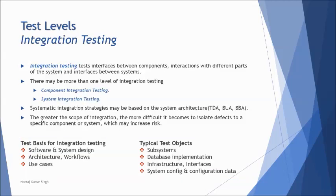The next level is integration testing, which is about the flow of data between different modules — also referred to as interfaces or interactions between modules. We have two sub-levels: component integration testing and system integration testing. Component integration testing is about interfaces between components within modules. For example, when you select a country, the state list gets filtered accordingly, and when you select a state, the city list gets customized.